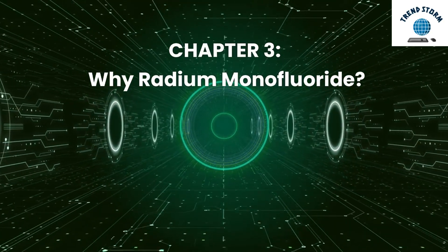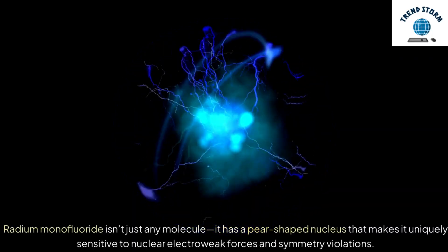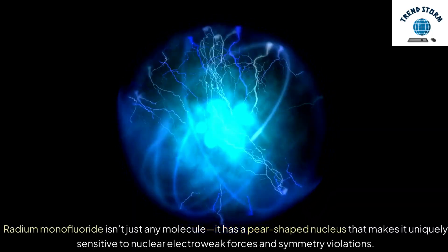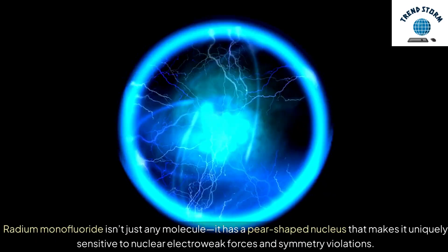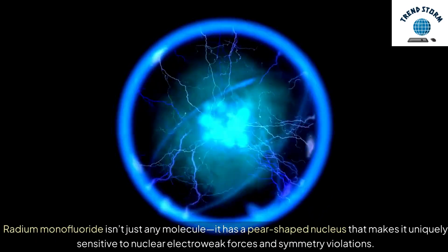Chapter 3: Why radium monofluoride? Radium monofluoride isn't just any molecule—it has a pear-shaped nucleus that makes it uniquely sensitive to nuclear electroweak forces and symmetry violations.